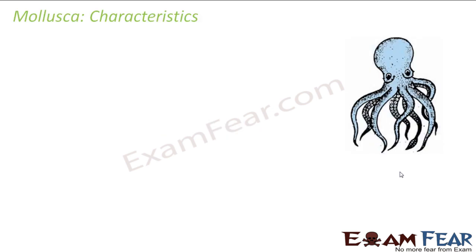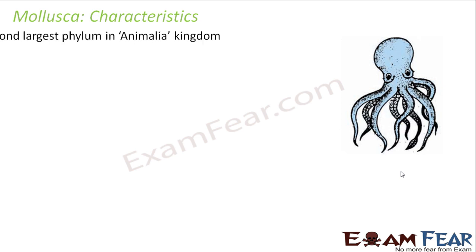Let us now move to the next phylum, that is Mollusca. Let us look at some of the basic characteristics of Mollusca. Mollusca is one of the ancient groups of animals with soft bodies. Here you can see this Octopus — Octopus falls under this category, Mollusca. This is the second largest phylum in the Animalia kingdom.